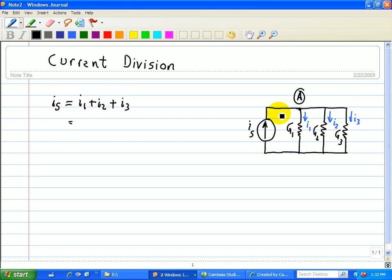We note that the voltage across each of these resistors and the current source is V. Hence we have for I1, G1 times V, plus G2 times V, plus G3 times V. We see that V is a common factor, so we can factor that out. So that's V times G1 plus G2 plus G3.